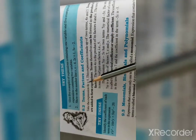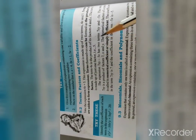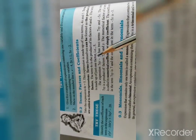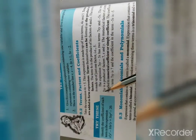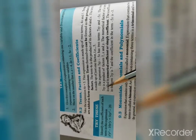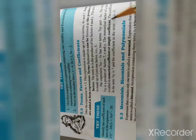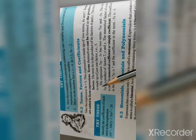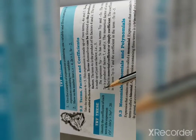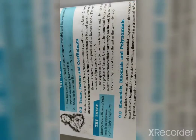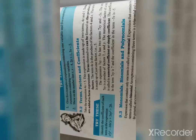The expression 7xy minus 5x has two terms: the first term is 7xy and the second term is minus 5x. The term 7xy is the product of factors 7, x, and y. The numerical factor of a term is called its numerical coefficient, or simply its coefficient. The coefficient in 7xy is 7, and the coefficient in minus 5x is minus 5.